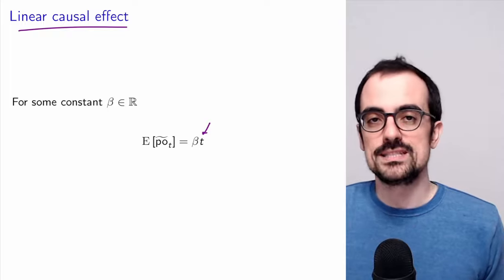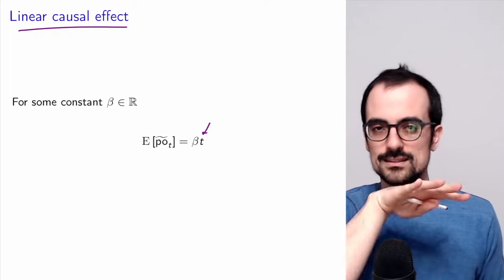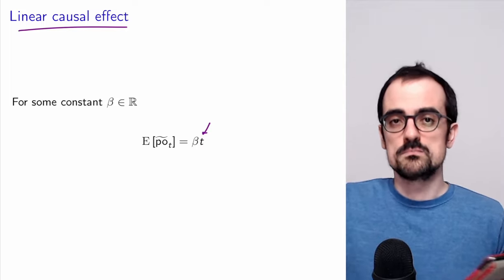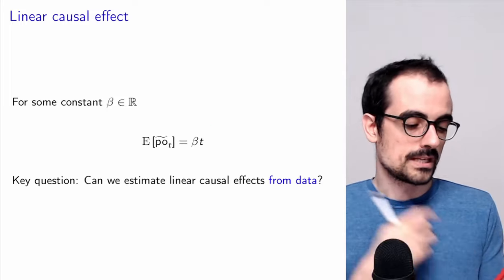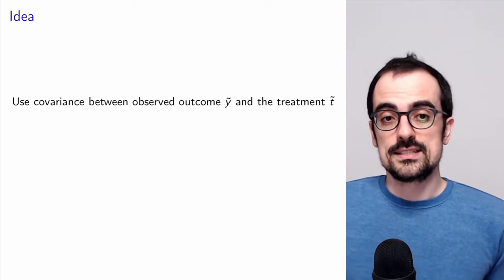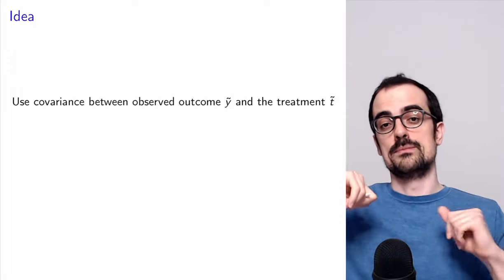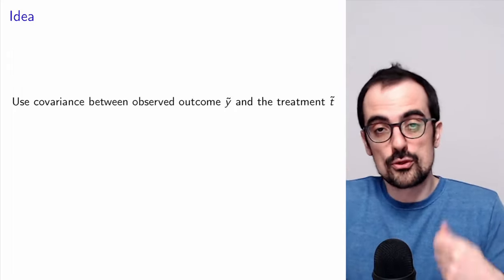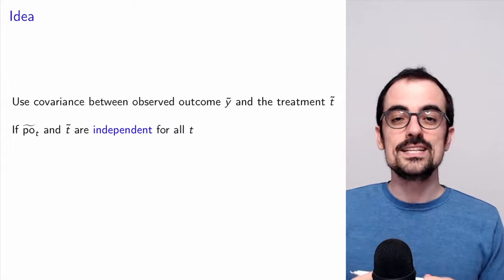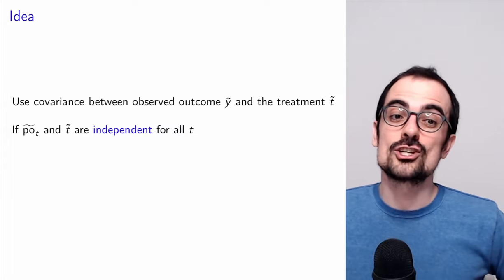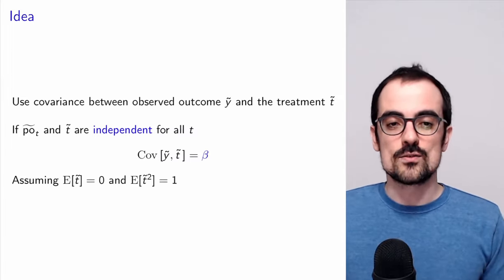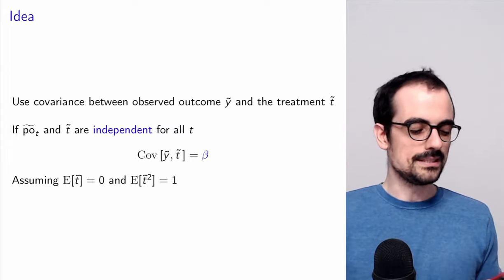In our simple example, beta would be zero because all potential outcomes were flat — there was no effect of the treatment. In other cases, there might be an effect and we want to find it. The question is whether we can estimate this from data. The idea is that if there is a linear relationship between the outcome and the treatment, we should be able to see it through the covariance between the observed outcome and the treatment — as long as the potential outcome and the treatment are independent for all values of the treatment.